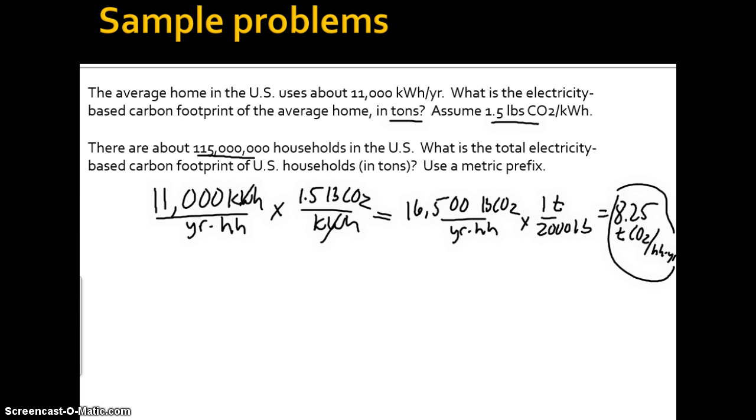Okay, so now there are about 115 million households in the U.S. What's the total electricity-based carbon footprint in the U.S.? So this is going to be tons using a metric prefix. So we're going to start with our answer here. So we have 8.25 tons of CO2. Now this is per household per year. And then we have 115 million households in the U.S. and that's it.